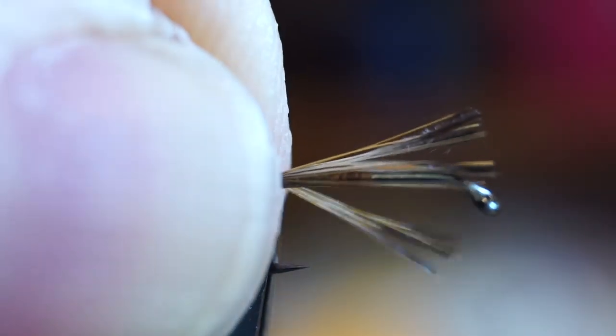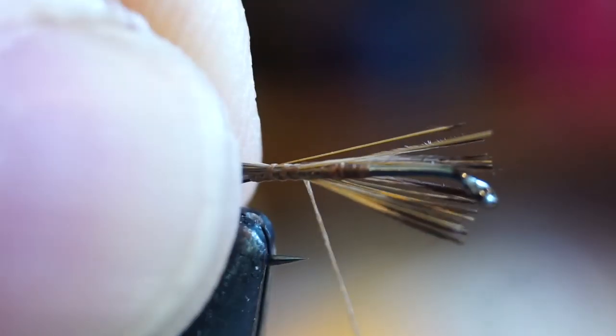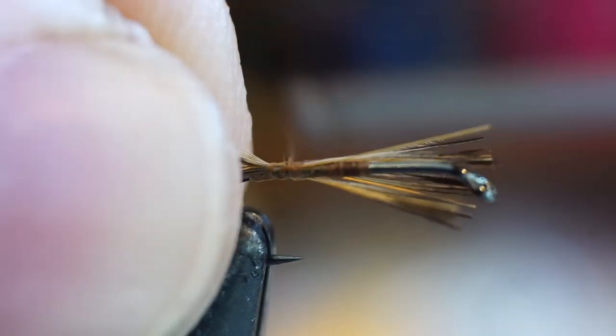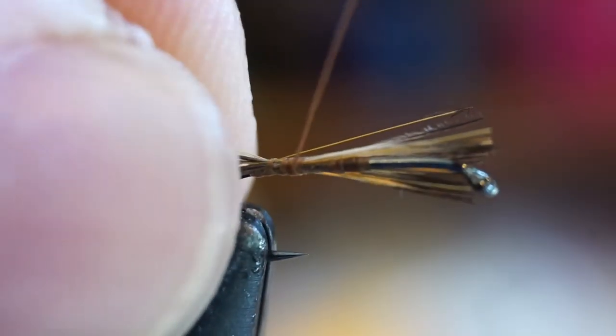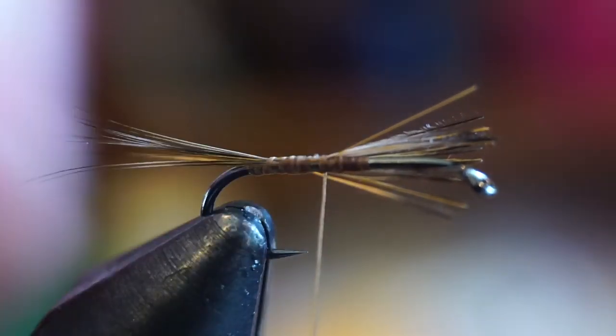Measure out about a hook shank length, and then make a pinch wrap to tie these in. Now unfortunately I didn't have this reach all the way back. Oops. Also, my fibers were rotating slightly, which is due to the angle at which I have to tie while filming. Sorry guys, I'm sure you'll do a lot better than this.